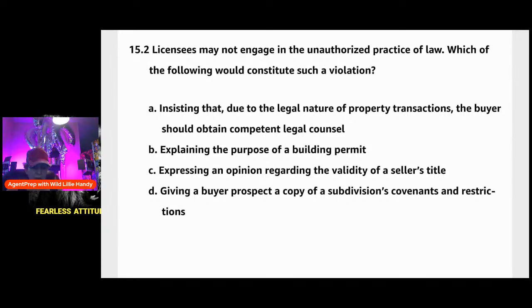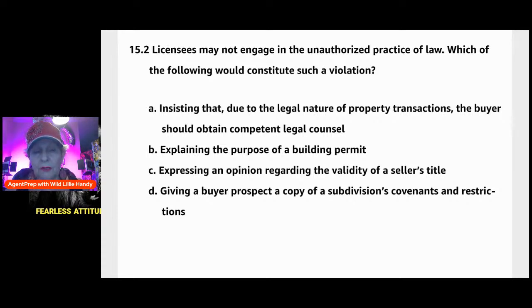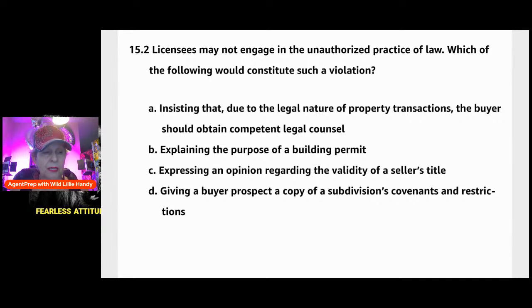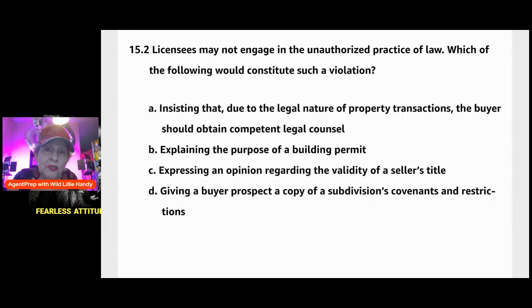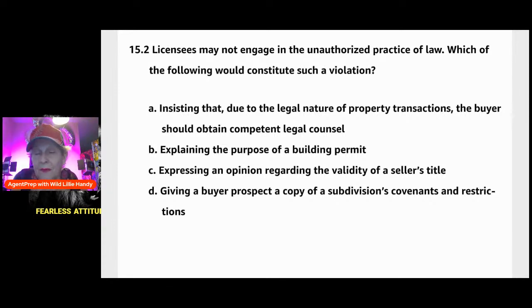Covenants and restrictions can be obtained from the HOA or a title company, sometimes for a charge due to the volume of pages. They are public information that subdivision developers must disclose because they want to restrict above and beyond zoning restrictions — such as requiring a four-bedroom house, three bathrooms, two-story brick, sidewalks, two-car garage, and fencing. If someone is buying a lot and what they build doesn't meet those requirements, they will not be allowed to purchase there.